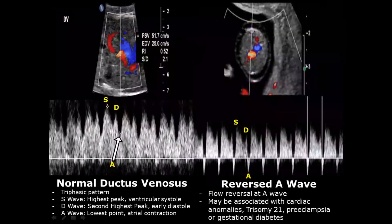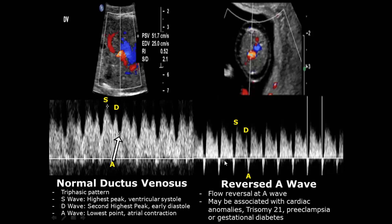Here we have another case of reversed A wave — the A wave is below the baseline, indicating flow reversal. This can be associated with cardiac anomalies, trisomy 21 (Down's syndrome), preeclampsia, or gestational diabetes.